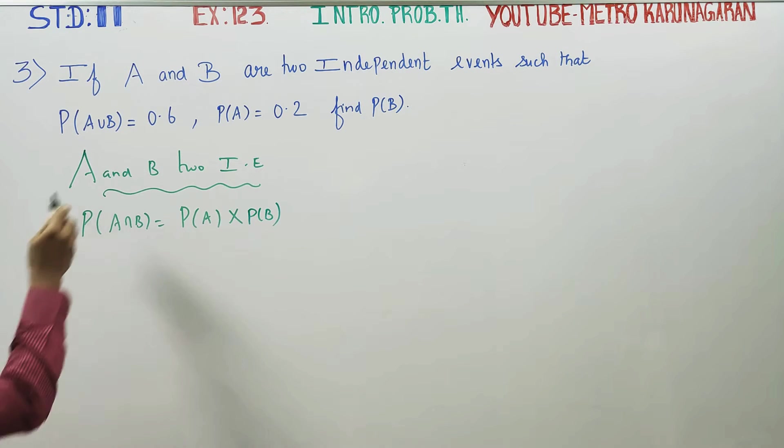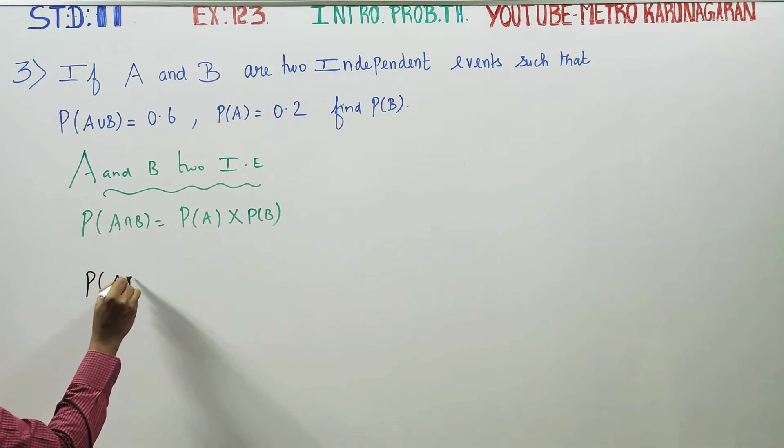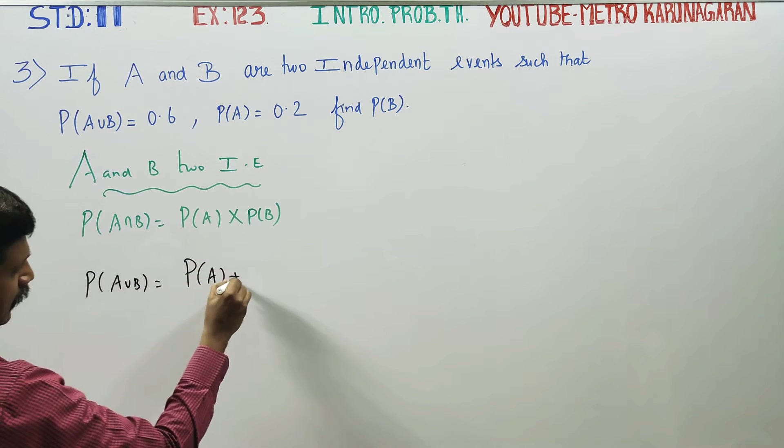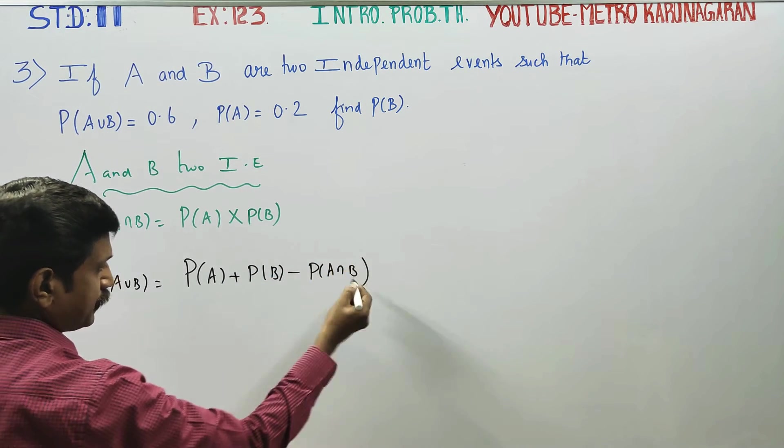It is given that probability of A union B is equal to 0.6. We will start with probability of A union B. The formula is probability of A plus probability of B minus probability of A intersection B.